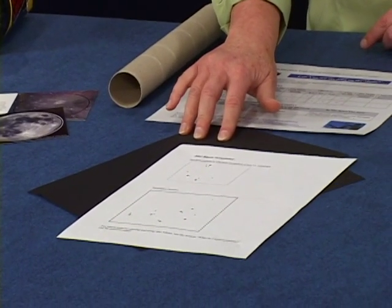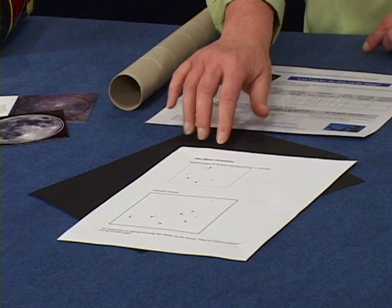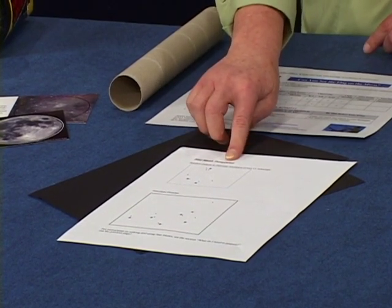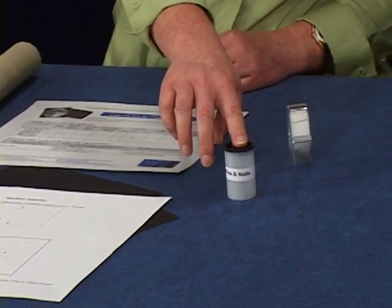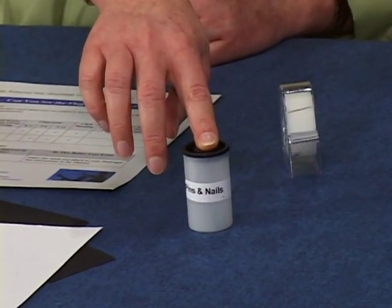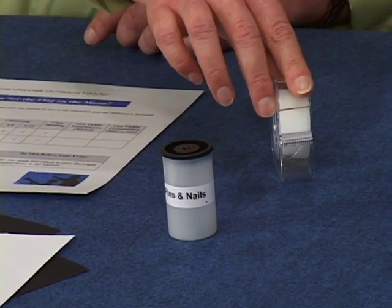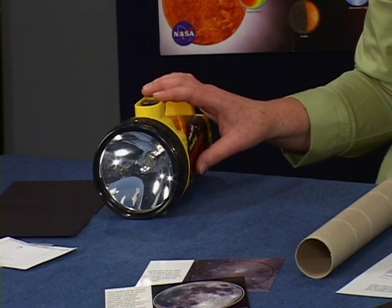It's a couple sheets of black construction paper, a star mask template, a film canister with pins and nails, and a roll of adhesive tape. These are used to make star masks to fit over your own flashlight to illustrate the concept of resolution. You'll need to provide scissors and a flashlight.